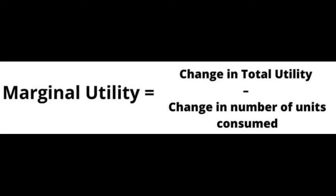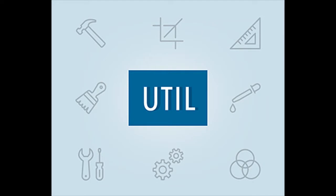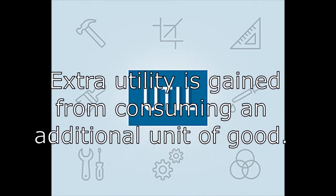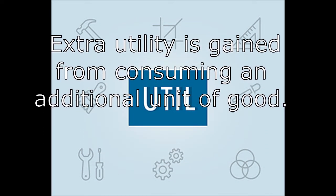Marginal utility is the additional utility gained from consuming an additional unit of a good or service. The unit used to measure utility is called a util — it is a unit wherein the extra utility is gained from consuming an additional unit of a good.